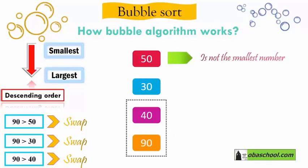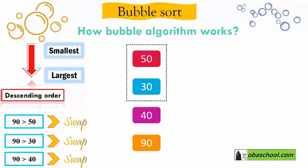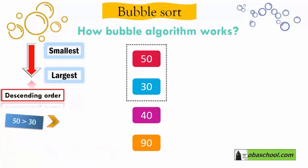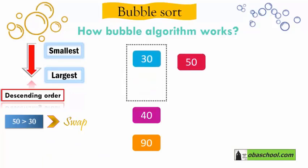Now look at the numbers — 50 is not the smallest number, yet it is at the top of the list. This means we haven't finished the bubble sort yet. We repeat the algorithm: compare the first two numbers, 50 and 30. 50 is bigger than 30, so we swap — 50 goes down and 30 goes up.